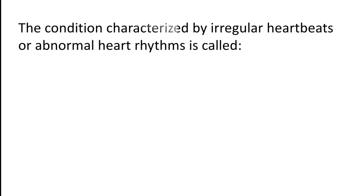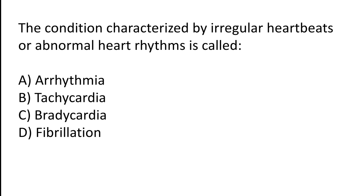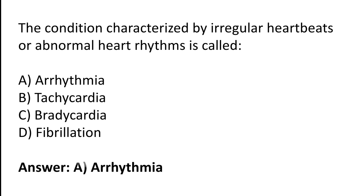The condition characterized by irregular heartbeats or abnormal heart rhythm is called: A) Arrhythmia, B) Tachycardia, C) Bradycardia, D) Fibrillation. The correct answer is option A. The condition characterized by irregular heartbeats or abnormal heart rhythm is called arrhythmia.